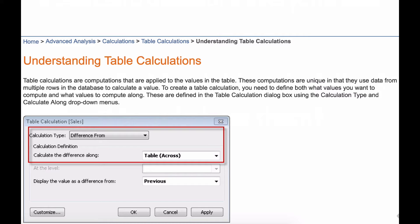And then they go on: these computations are unique in that they use data from multiple rows in the database to calculate a value. First, it doesn't help us understand - it doesn't shed any more light. The second thing I feel is this is wrong.